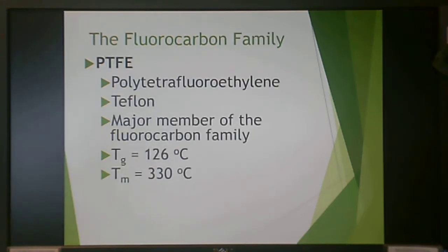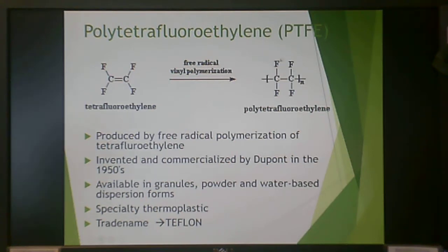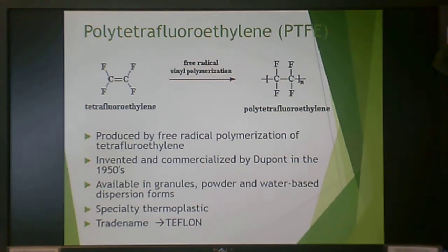The major member of the fluorocarbon family is PTFE — Teflon. It has a TG of 126°C and a TM of 330°C. It is made by free radical polymerization of tetrafluoroethylene monomer to give polytetrafluoroethylene. In the repeat unit, all hydrogen positions of ethylene are replaced with fluorine atoms. It was invented and commercialized by DuPont in the 1950s and is available in granules, powder, and water-based dispersion. It is a true specialty thermoplastic, sold under the trade name Teflon.